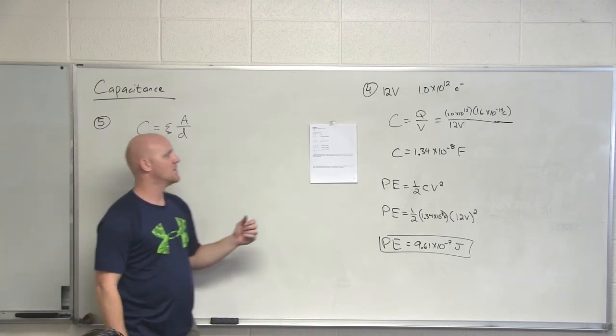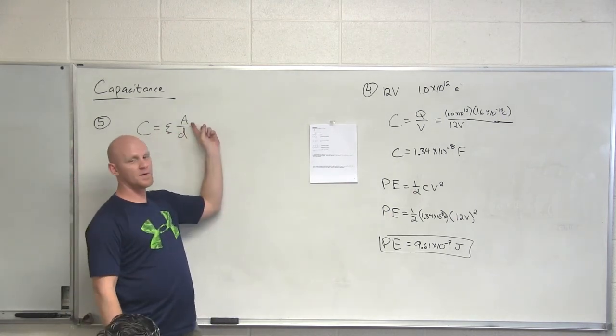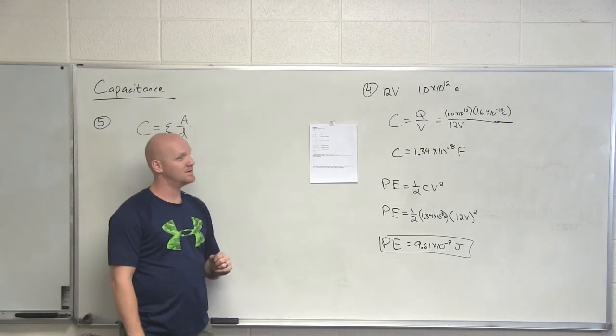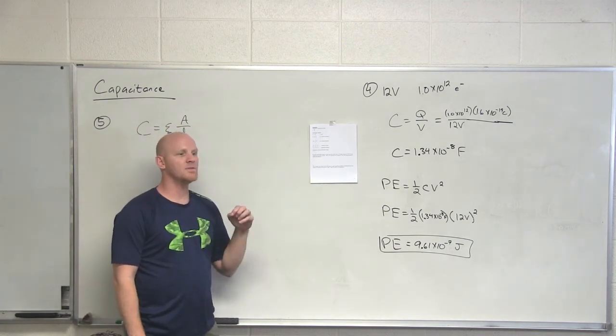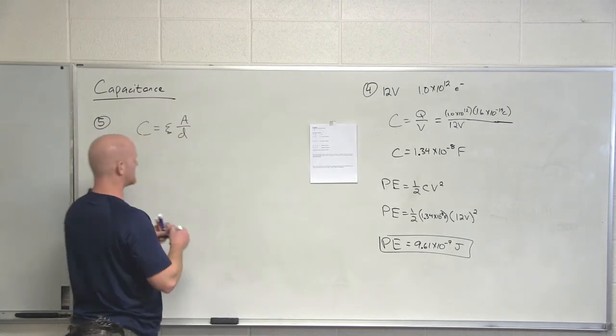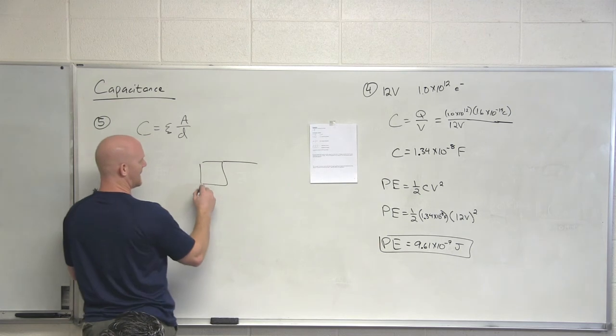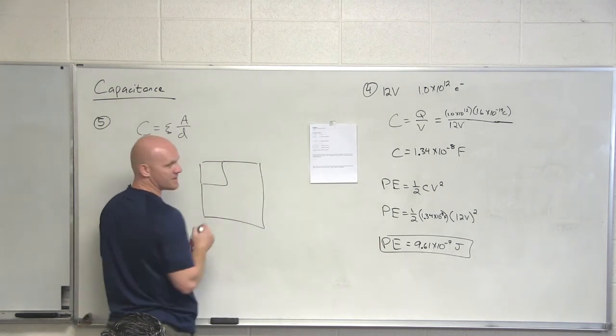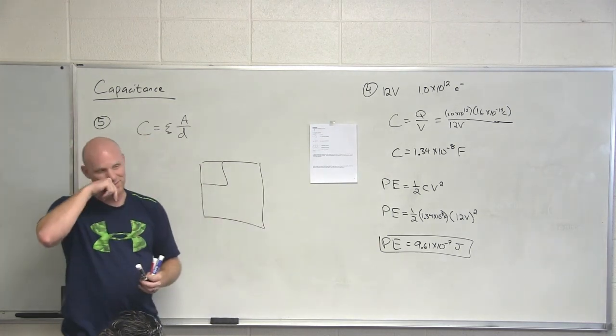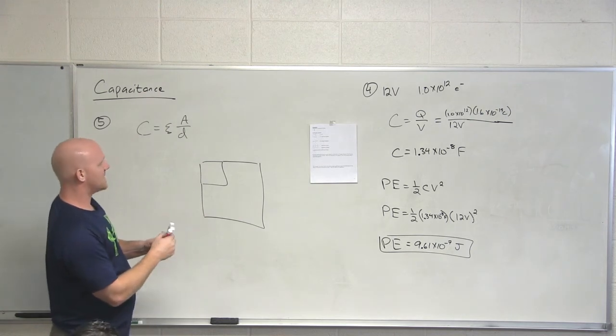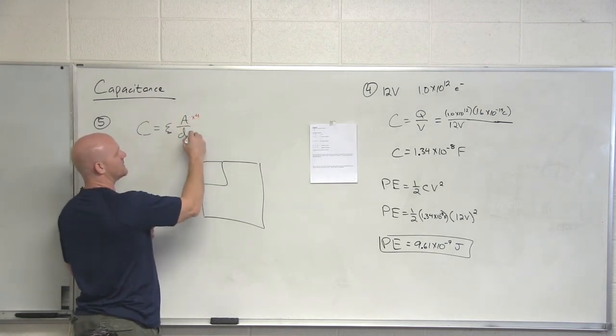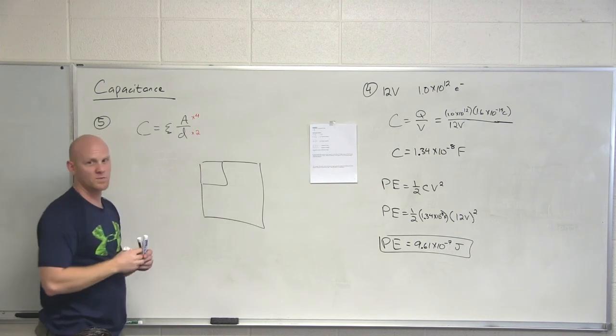Makes it half. Good. What did I do to the area? No, what did I double? I doubled the length of each side. So notice if I got a square parallel plate capacitor and I double the length of this side and the length of this side, then what have I really done to the area? Quadrupled it. Good.